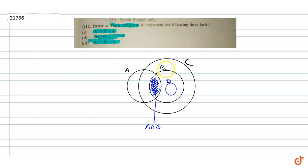This means A and D have no common value. D is a proper subset of B, which means B contains D. And B is a proper subset of C, which means C contains B. So this is our required Venn diagram.